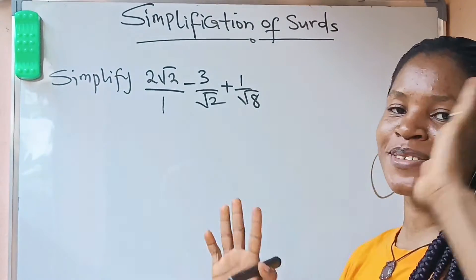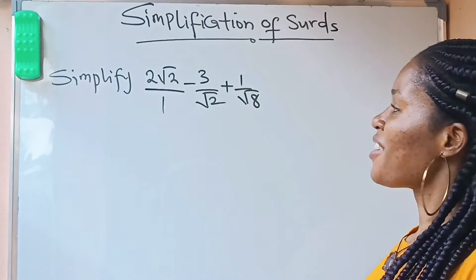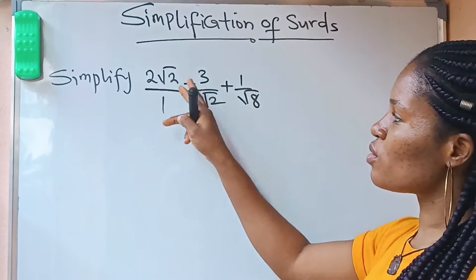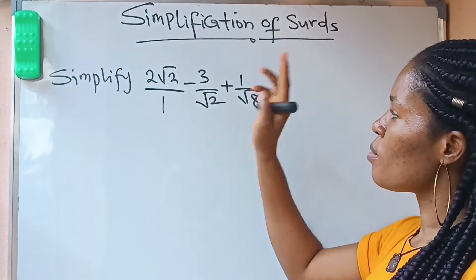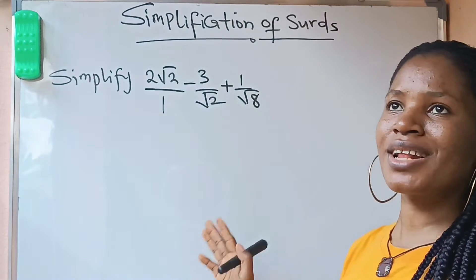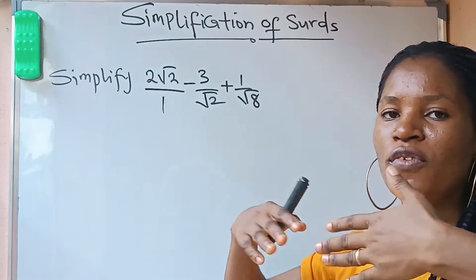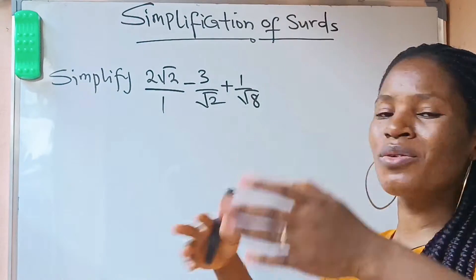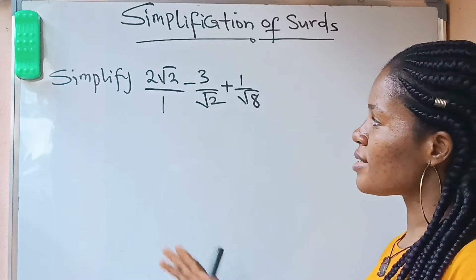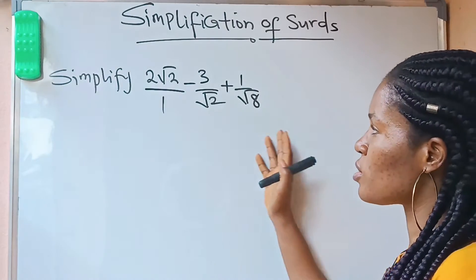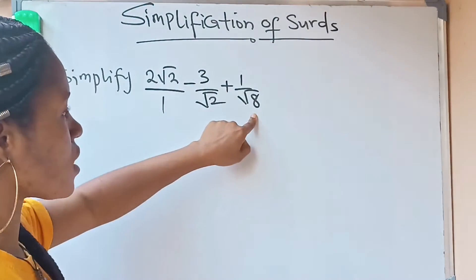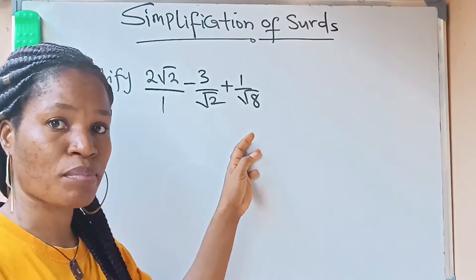Hello everybody, welcome to my channel. We have to simplify this: 2 root 2 minus 3 over root 2, plus 1 over root 8. This is just like solving normal fraction addition — you solve it the same way you solve normal fractions. But first of all, we need to simplify root 8, because root 8 is not in its simplest form.